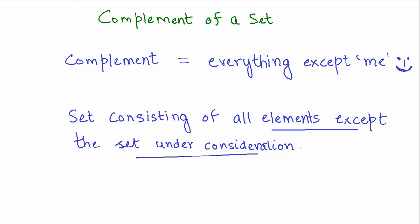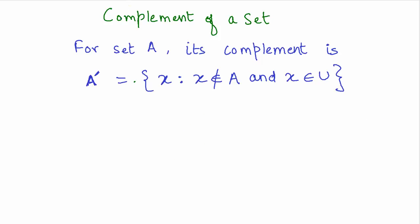Now let's look at how we define the complement of a set in mathematics. For a set A, its complement is defined as A' (A-tick). The complement of a set comprises of all those elements which are not present in it.